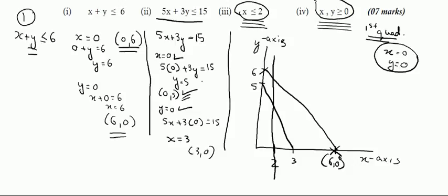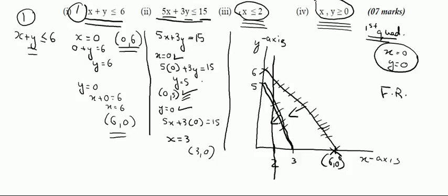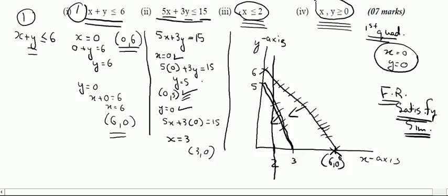Now let us shade the feasible region. The first inequality, x plus y less than or equal to 6, means the shaded region should be below this line. The second inequality, 5x plus 3y less than or equal to 15, means the shaded region must also be below that line. The feasible region satisfies all conditions simultaneously, so we cannot shade the area between the two lines.